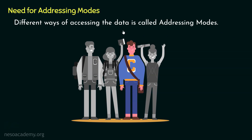So in that case, we can also specify that person using some features. Like, he is wearing a blue sweatshirt, he is having brown hair, and also he is having a side bag. So clearly, by mentioning the features of the person, we can also specify him. So this is what is meant by different ways of accessing the data, and this is what is called addressing modes.